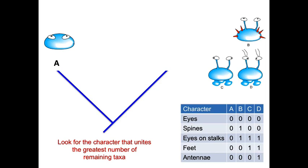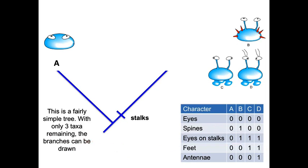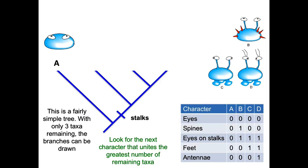What would be the next character that we'd want to look at? Which character sticks as many of these groups B, C, and D together? Eyes on stalks — because three of them have it. We only have three more things to put on this tree, so you can easily draw your other lines. We put stalks here. Now we've got to figure out how B, C, and D are related to each other. What is the next character that groups as many of them together as possible? You just keep doing this over and over again. So feet — feet is going to group C and D together, making them most closely related to each other.